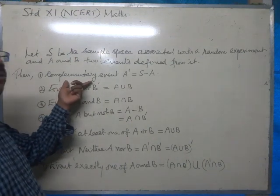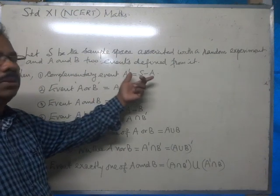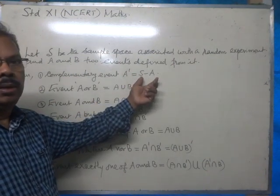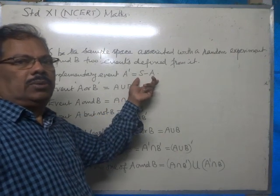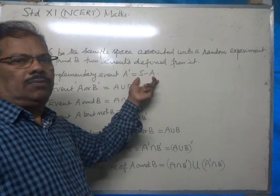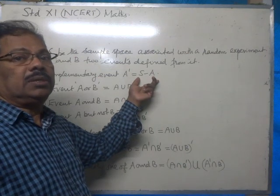Now, complementary event of A is sample space minus A. In set theory, we have studied it. If A is a subset of S, then A dash will be S minus A.